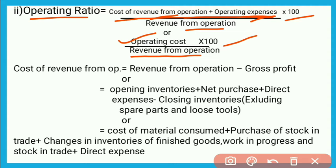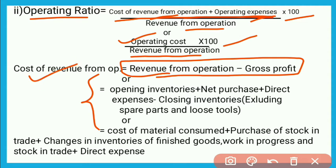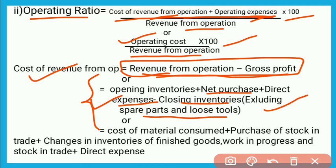अब यहाँ पर cost of revenue from operations अगर directly नहीं दिया हुआ है तो पहला formula apply करें: Revenue from Operations minus Gross Profit — इससे cost of revenue from operations मिल जाएगा। अगर इस pattern पर information नहीं है तो second formula apply करें: Opening Inventories + Net Purchases + Direct Expenses − Closing Inventory। ध्यान रखें कि inventory में spare parts and loose tools को exclude करेंगे।